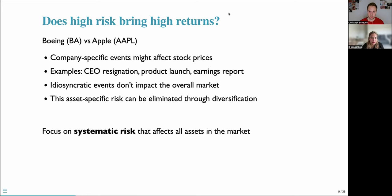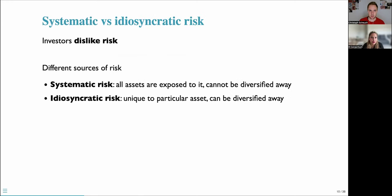In this webinar, we focus on systematic risk that affects all assets in the market, and the question of how each asset co-moves with the market. The underlying assumption is that investors dislike risk. In the CAPM, there are two sources of risk: systematic risk, which all assets are exposed to and cannot be diversified away, and idiosyncratic risk, which is unique to particular assets and can be diversified away.